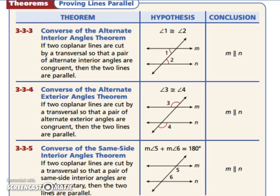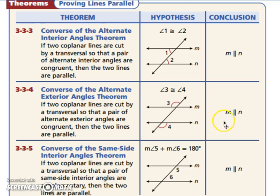Let's look at the converse of our three other theorems. The converse of the alternate interior angles theorem states that if your alternate interior angles are congruent, then your two lines have to be parallel. Same with the converse of the alternate exterior angles theorem — if they are congruent, then the lines have to be parallel. So corresponding angles, alternate interior angles, alternate exterior angles: if they are congruent, the two lines will be parallel. The converse of the same side interior angles theorem states that if your two same side interior angles add up to 180 degrees, then those lines have to be parallel.